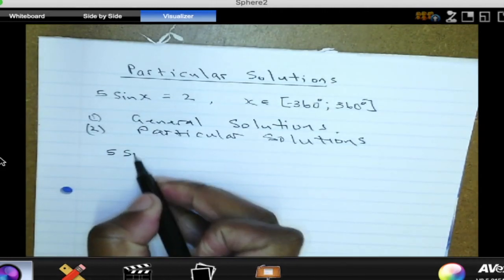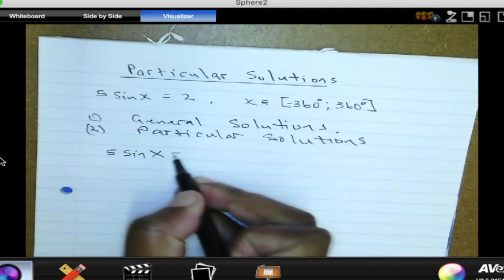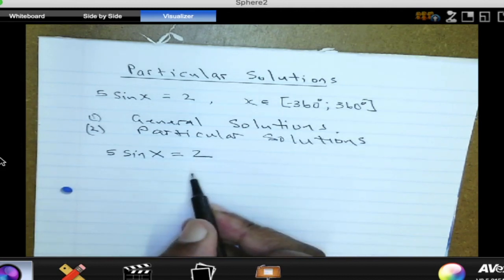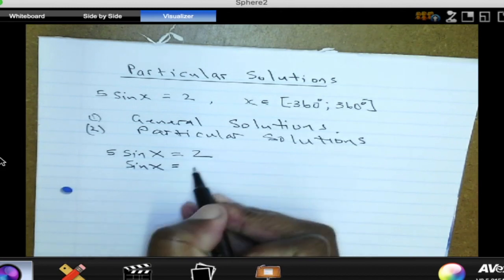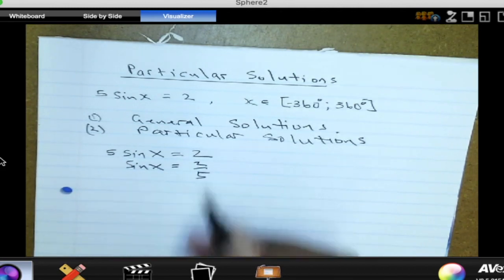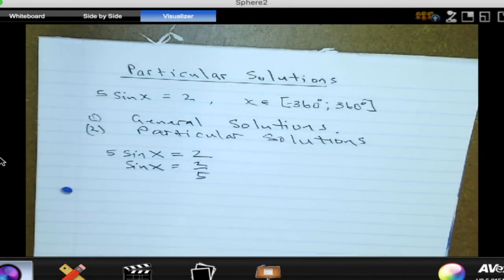So let us use the same method that we used the other time. 5 sine of X is equal to 2, so we need to make sine X the subject. So sine X should be equal to 2 over 5.